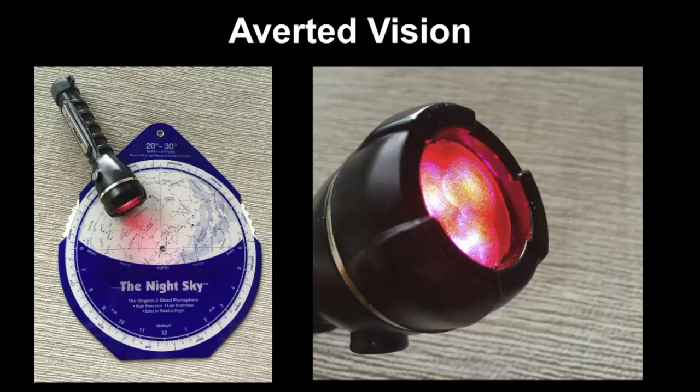Another important thing to acknowledge with averted vision is making sure you maintain your night vision. Using red light is very important because it has the least effect on dark adaptation — the human eye is less sensitive to red wavelengths. Using red light is something very common when you go out to stargazing star parties. What I do for my red light is find a flashlight I already have and paint it with red nail polish.